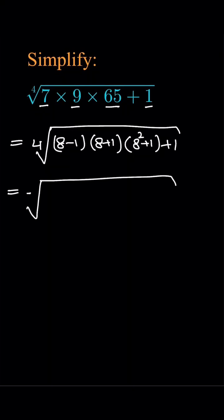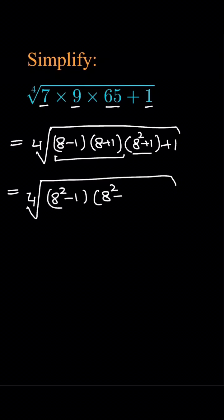This is equal to the 4th root of — using our formula (A minus B)(A plus B) — which gives 8 squared minus 1, times 8 squared plus 1, plus 1.